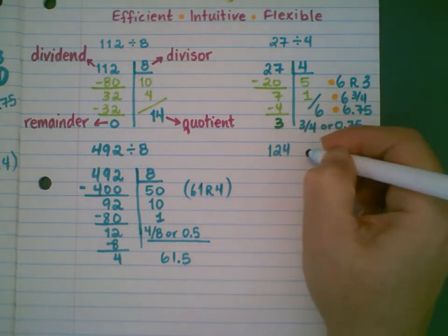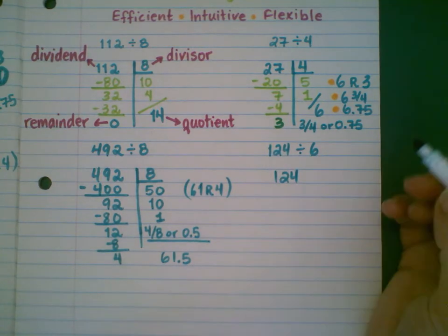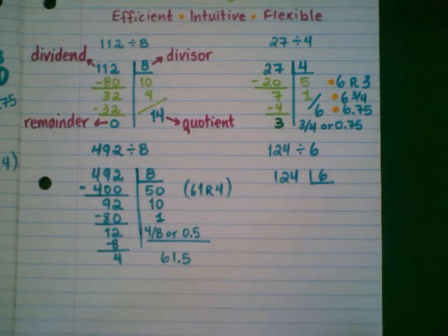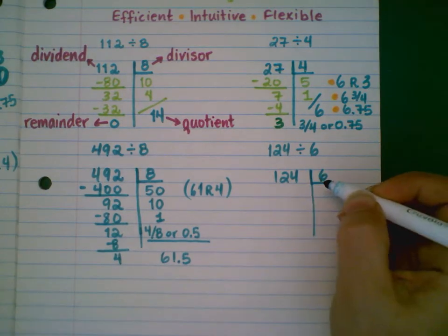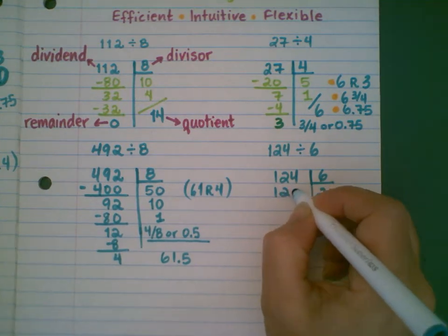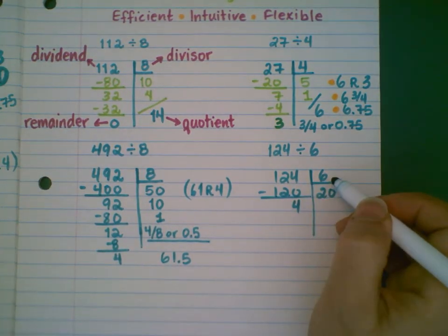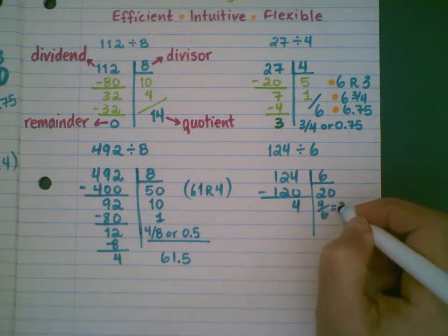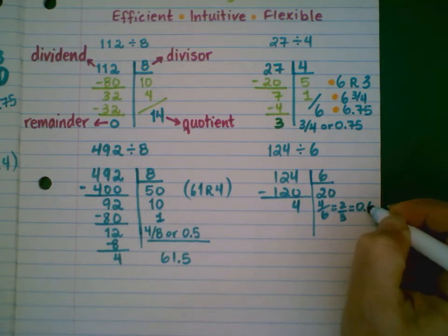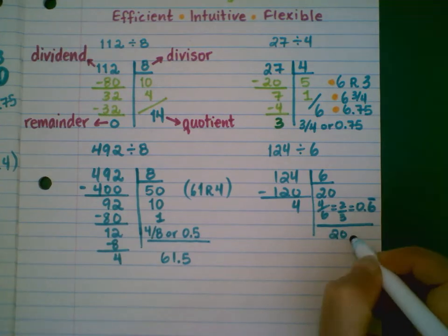Another one: 124 divided by 6. The dividend is 124 and the divisor — the size of the groups — is 6. Now 6 goes into 12 twice, so 6 times 20 is 120. The remainder is 4. 4 sixths as a fraction is 4 over 6, which simplifies to 2 over 3, which I also know is 0.6 repeating. So my quotient is 20.6 repeating.